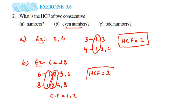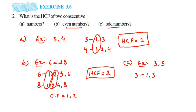Now the third one: consecutive odd numbers. Consecutive odd numbers are like 5, 7 or 9, 11, like that. Let us take an example of 3 and 5. The factors of 3 are 1 and 3. The factors of 5 are 1 and 5.